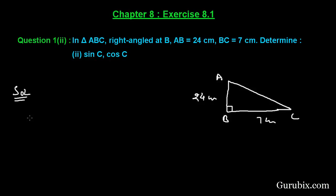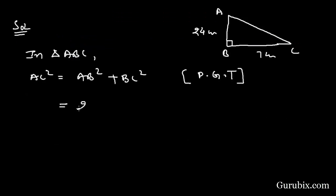Now we shall apply Pythagoras theorem to find AC. In triangle ABC, AC square equals AB square plus BC square by PGT. We have 24 cm square plus 7 cm square. Here we have 576 cm square.